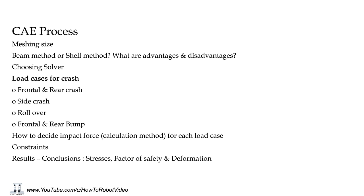To perform FEA (Finite Element Analysis), you have to choose the mesh size wisely, since it plays an important role — it decides the accuracy of results and analysis time. Then choose a method of analysis: you can choose the beam method, in which your roll cage members will be treated as solid beams, or the shell method, where they will be treated as hollow pipes. The beam method is easy and time-saving, but the shell method gives quite accurate results. Now choose the solver — you can choose ANSYS, HYPERMESH, SOLIDWORKS, or any other software package; they all have good solvers for your purpose.